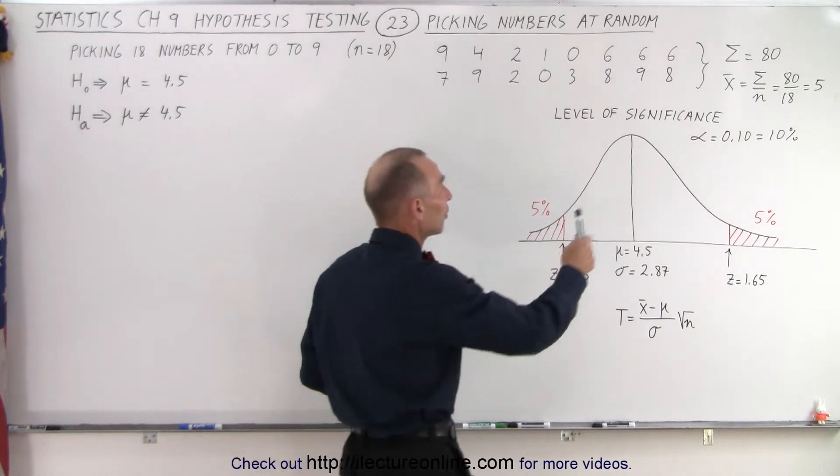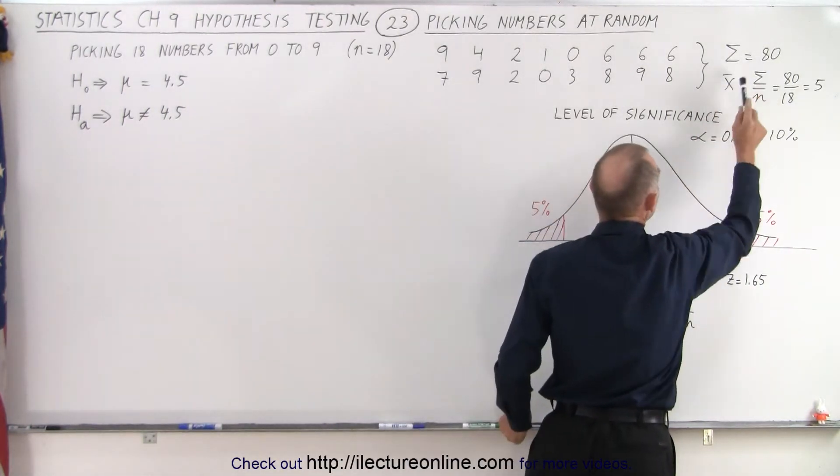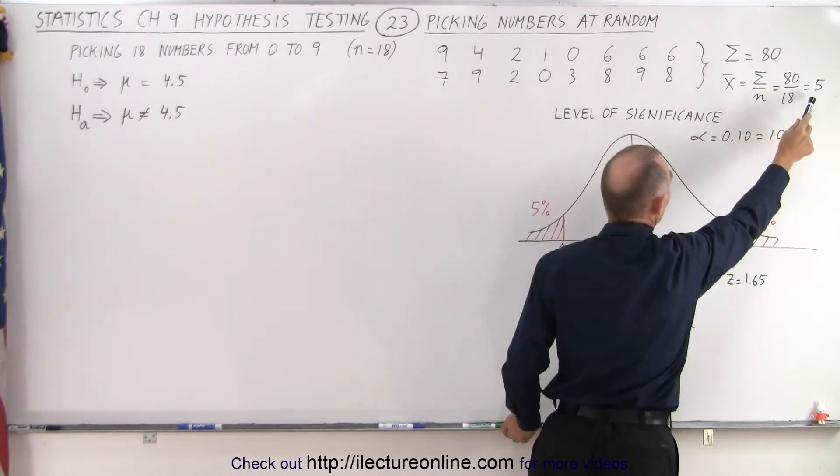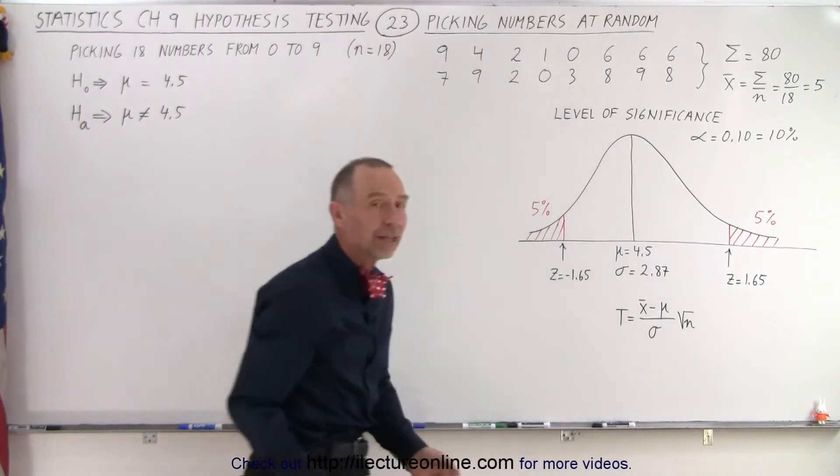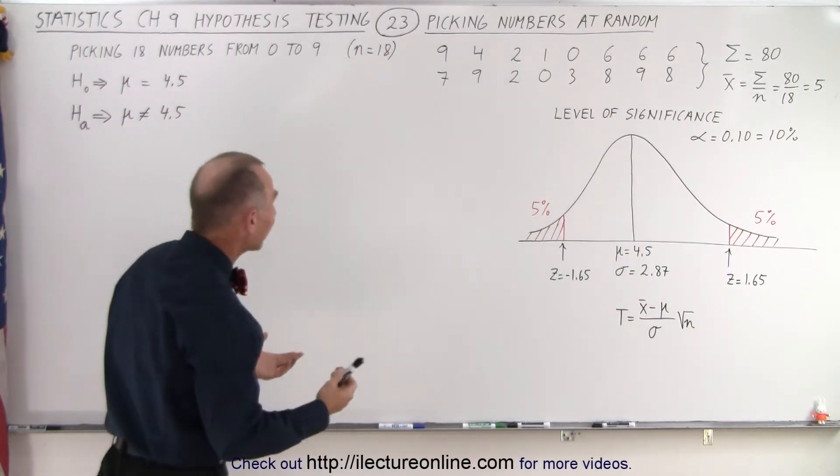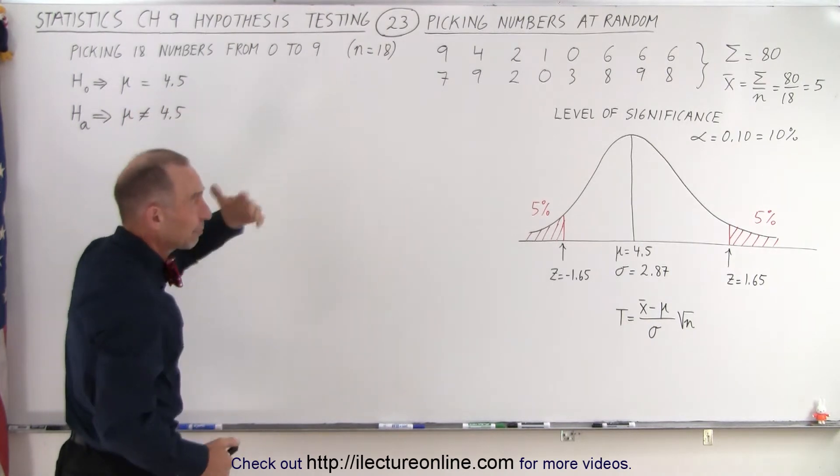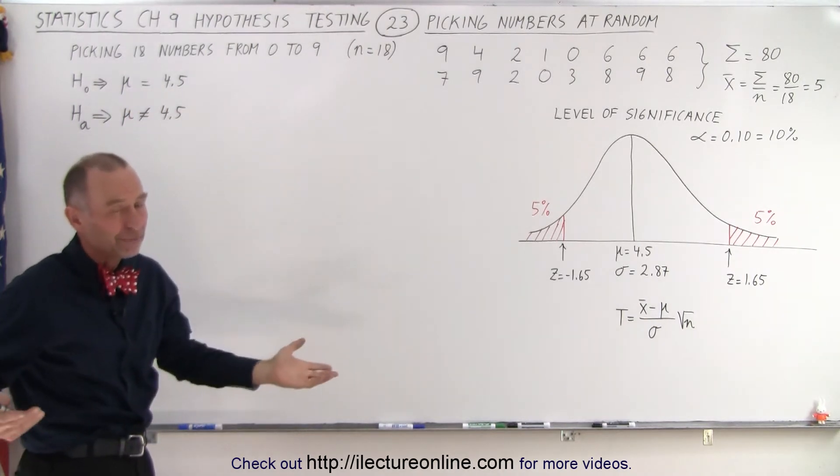So we then added all of them up and they're being equal to 80. Then we found the average or the mean of the sample of 18 numbers, which was equal to five. Now the question is, does that violate the concept that we think the average should be 4.5? We picked 18, it was equal to five.